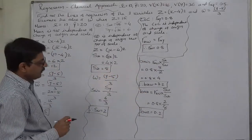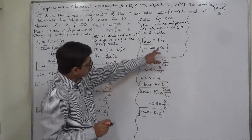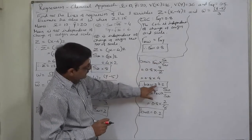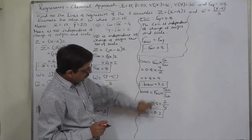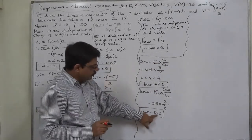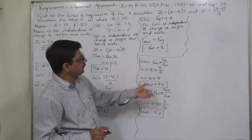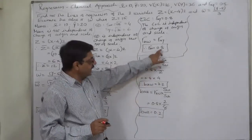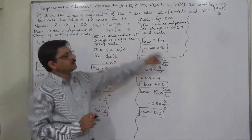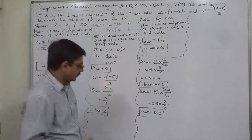We can verify: B_zw times B_wz = 3.2 times 0.2 = 0.64, and its square root is 0.8. Since both regression coefficients are positive, the coefficient of correlation must also be positive, confirming r = 0.8.